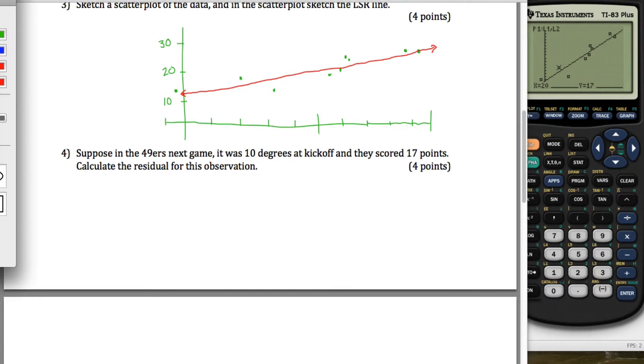Number four says, suppose the 49ers, in the 49ers next game, it was 10 degrees at kickoff and they scored 17 points. Calculate the residual. What you need to know about the residual is it's the actual value, what actually happened, minus the predicted value.